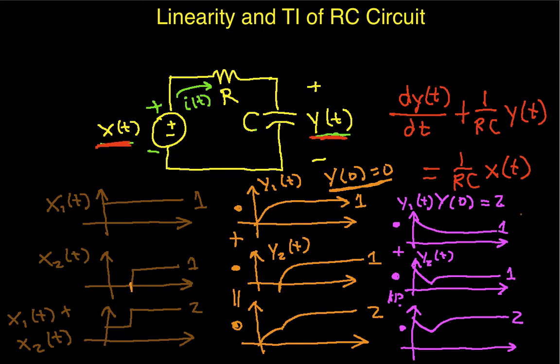One way to see that is at 0, y1 is 2 and y2 is 2. So, at 0, y1 plus y2 is 4, but here, it's still equal to 2. So, in this case, when the initial condition, the initial voltage on the capacitor is 2, this system does not satisfy additivity.